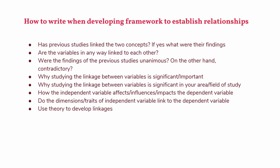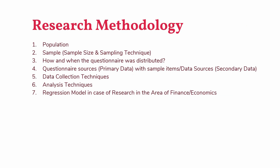Once you are through your literature review, the next step is writing about your research methodology. What is your population? What is your sampling size and sampling technique? How and when were the questionnaires distributed if it was a primary study? What are the sources of the questionnaire and which sample items? If it is a secondary study, mention the sources of the data. Why was a particular sample selected — for example, if you are studying five countries, why those five and not ten or twenty? What were the data collection and analysis techniques? In the case of research in finance and economics, you need to mention your regression model and explain it.